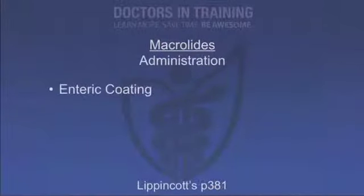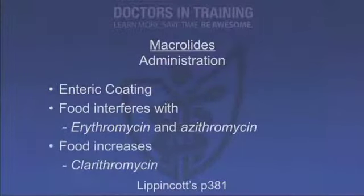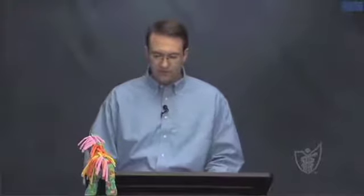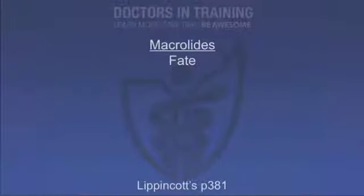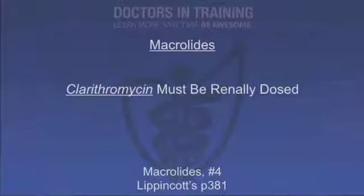Pharmacokinetics: most macrolides have an enteric coating to prevent destruction by gastric acid. Food interferes with erythromycin and azithromycin absorption, but increases clarithromycin uptake. IV erythromycin has problems with thrombophlebitis. Distribution is wide but poor CSF penetration; uniquely distributes into prostatic fluid and accumulates in macrophages. Azithromycin has the largest volume of distribution and longest half-life, accumulating in the liver. Erythromycin and azithromycin are excreted biliary — no renal dosing needed — but clarithromycin requires renal dosing.